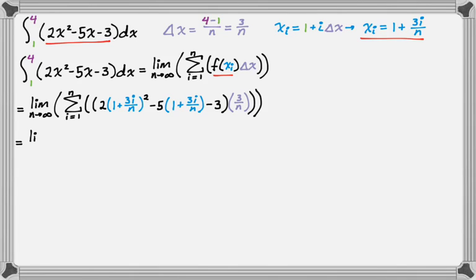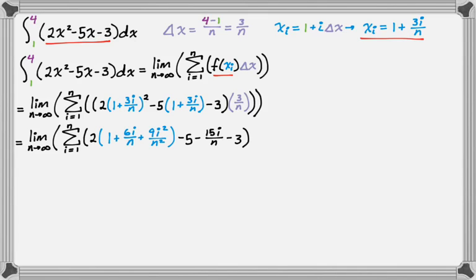In the next step, I'm going to do a lot of expanding. I need to expand (1 + 3i/n)². That's 1 + 6i/n + 9i²/n². Then I distribute the negative 5, so I get -5 - 15i/n. The -3 just hangs around. That's still f(x sub i) that we're messing around with, and there's still a delta x here. Close the summation, close the limit.